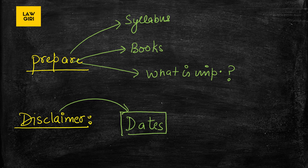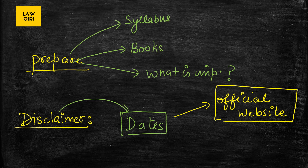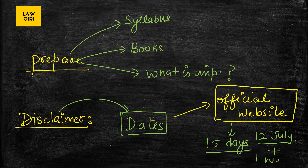A disclaimer: whenever it comes to exam dates, always believe the official website only — do not believe any other website or channel. One tip: keep in mind that you have just about 15 days. We know the exam won't take place before 12 July, and if we add one or two more weeks, we have a rough timeline. Give yourself that deadline so you don't be lazy.